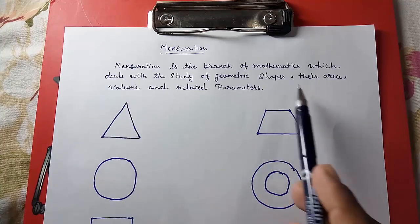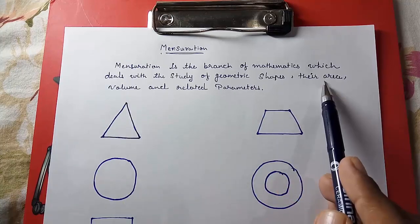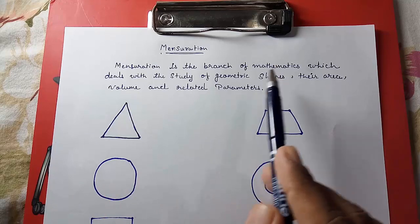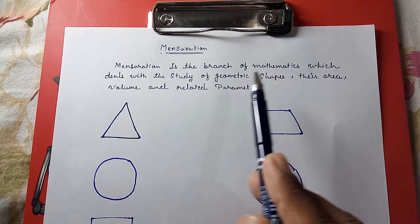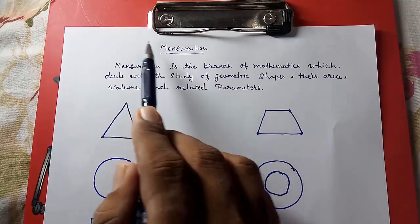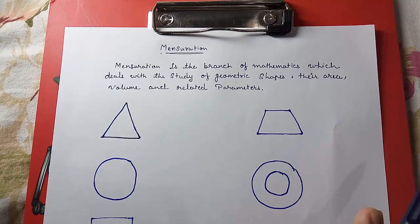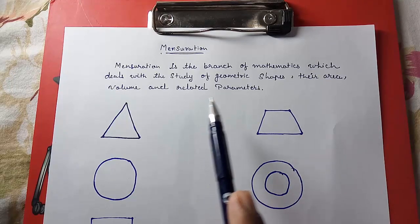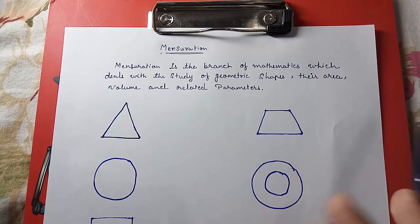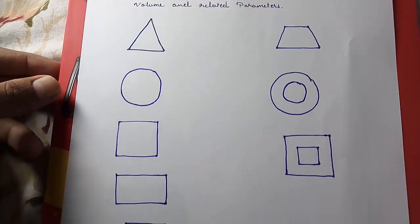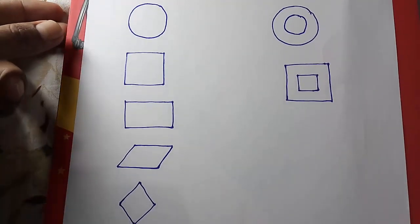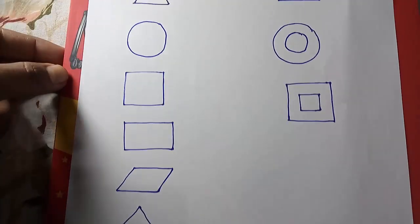We can find out the area, volume and the perimeter of different geometrical shapes — that is called mensuration. In this video we are going to study about only the two dimensional figures. In my next video I will tell you about area and volume of three dimensional figures. So here I will show you these are the different figures about which we are going to study.